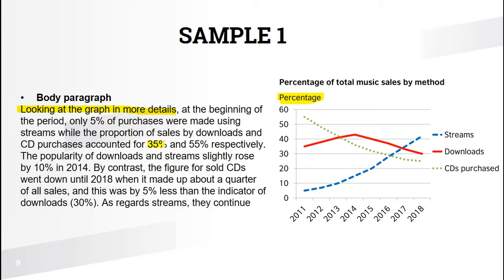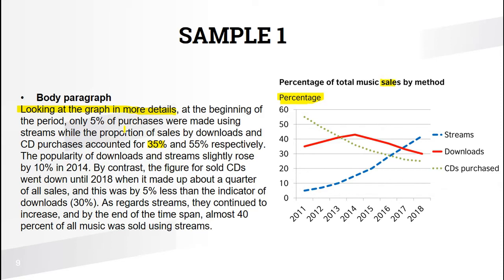While the proportion of sales by downloads and CD purchases accounted for 35% and 55% respectively. Notice I used 'purchases' instead of 'sales' — this is a kind of backward paraphrasing: if someone sells, someone buys. The popularity of downloads and streams slightly rose by 10% in 2014: streams went from 5% in 2011 to 15%, and downloads from 35% to almost 45%.